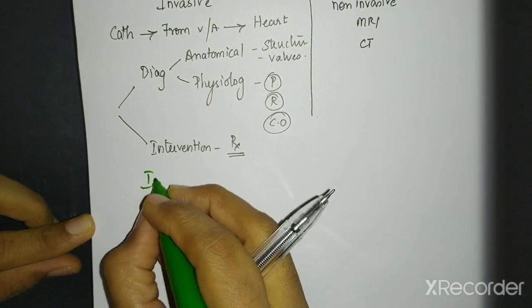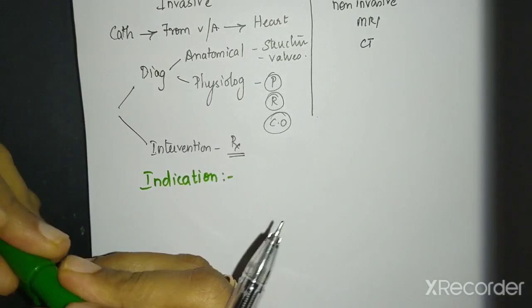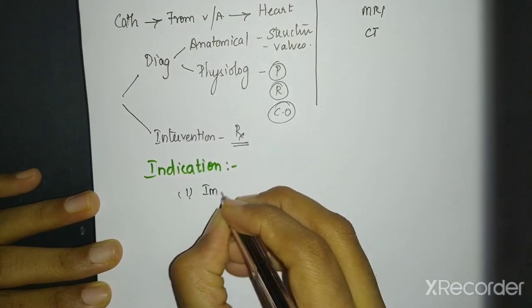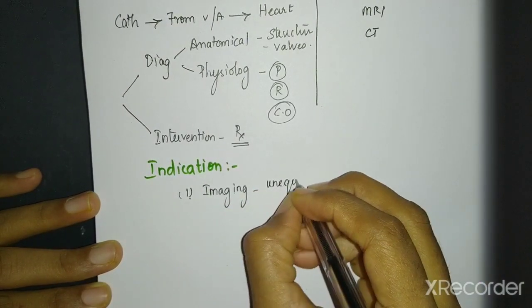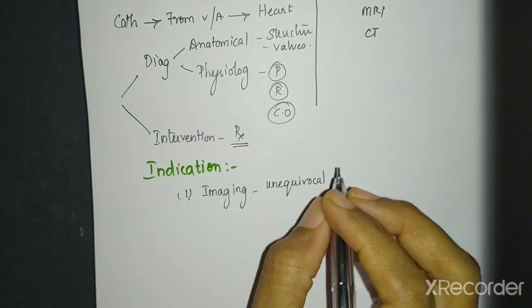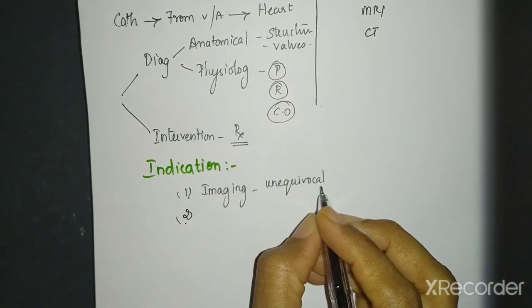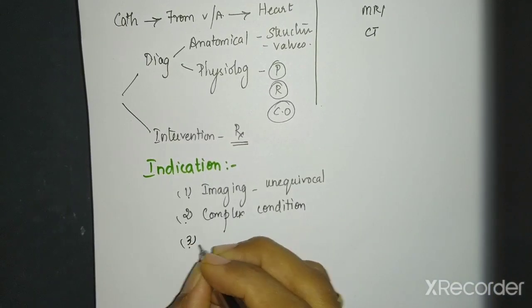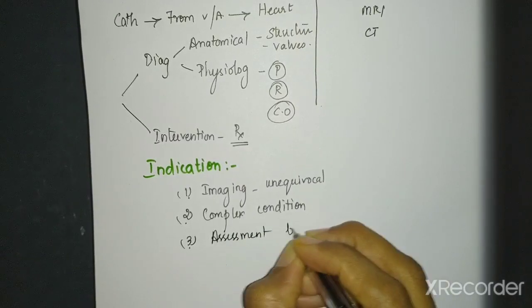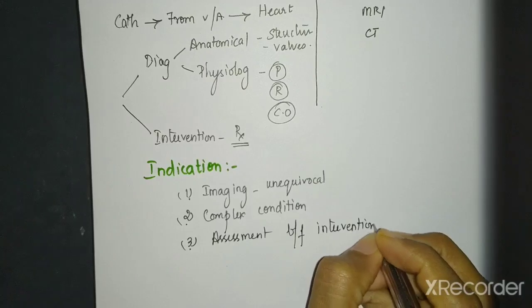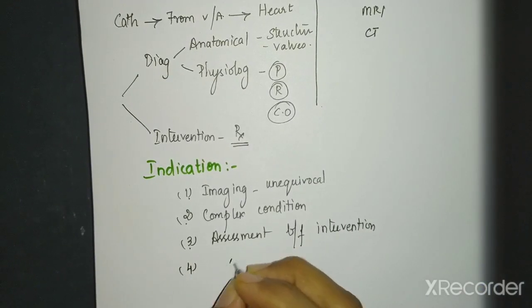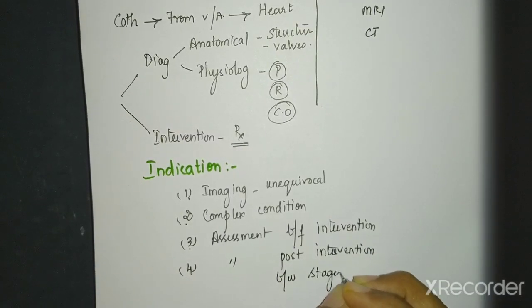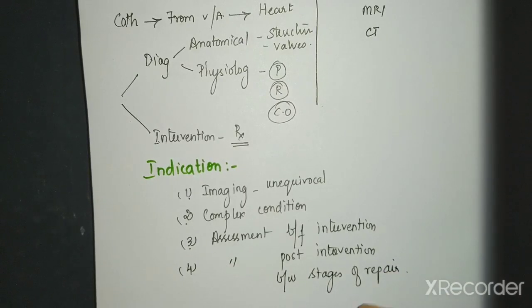Then you will talk about the indications. So if the use of diagnostic catheterization is coming down then where do we use it actually? You use in situations where your other imaging modalities are unequivocal or equivocal. Basically it is not telling you what the problem is. So imaging is not telling you properly or it is a very complex condition and you actually need to go inside and see what is wrong.